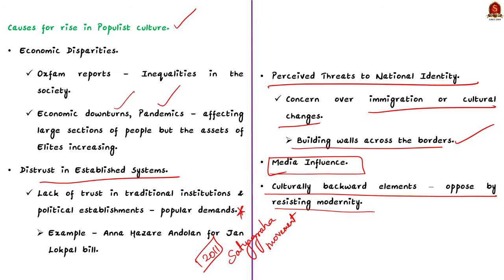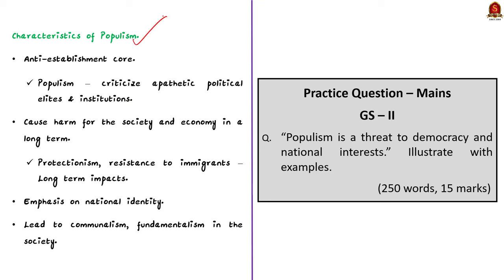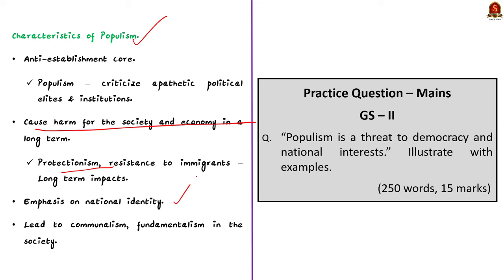Now let us see the characteristics of populism. The first characteristic is that populism should have an anti-establishment core — it is often used to criticize political elites and institutions that are apathetic to the needs of commoners. Secondly, it may cause harm to society and the economy in the longer run; policies like protectionism and resistance to immigrants can damage the nation long-term. Thirdly, there is an emphasis on national identity, based on the assumption that collective interest is bigger than the individual. Finally, it may lead to communalism and fundamentalism in society.